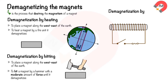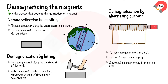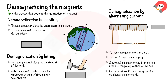The second method is demagnetization by alternating current. Insert a magnet into a long coil, then turn on the AC power supply. Slowly pull the magnet away from the coil until it is completely outside. The large alternating current generates a changing magnetic field that demagnetizes the magnet. Do not keep the magnet inside the coil, as this will not fully demagnetize it.